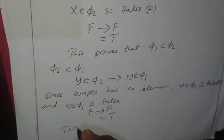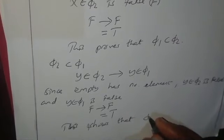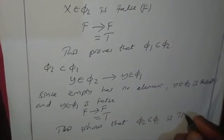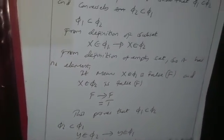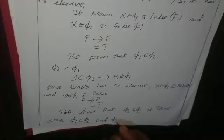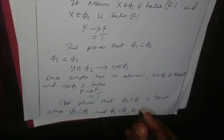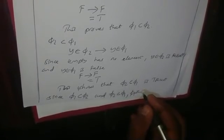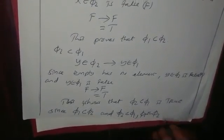This shows that empty set two is a subset of empty set one is true. Thus we have shown that empty set one is a subset of empty set two, and also empty set two is a subset of empty set one. Since empty set one is a subset of empty set two and empty set two is a subset of empty set one, we can conclude that empty set one equals empty set two, which is what was required. This is the end of our proof. Thank you for listening.